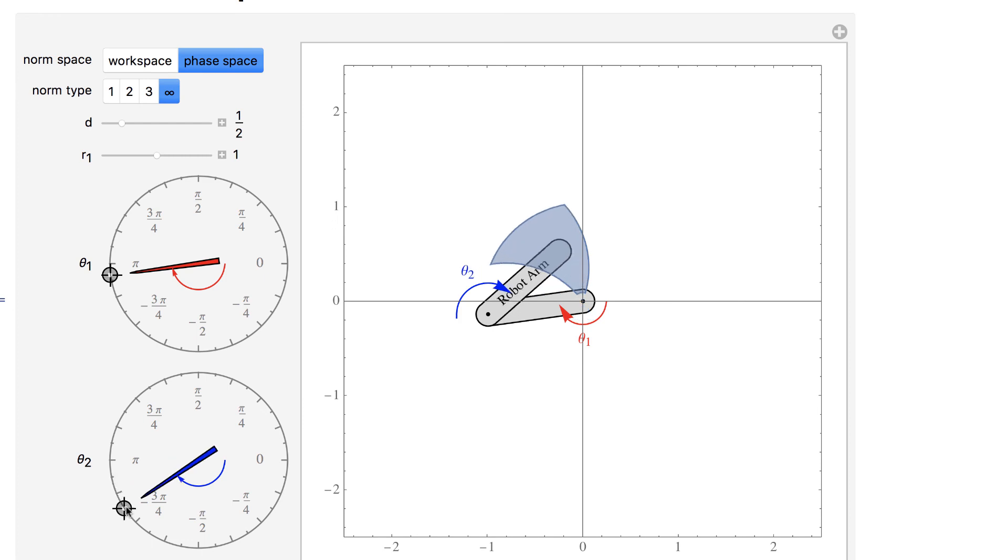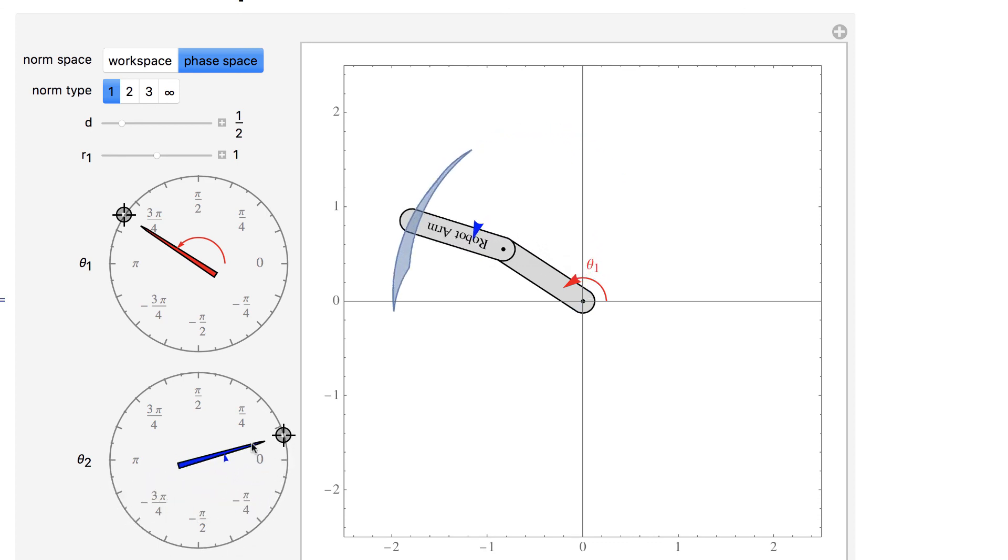Now, theta1 does not change the shape of the close region, but theta2 does. Theta2, when extended, stretches the region out, and when folded back on itself, the region self-intersects.